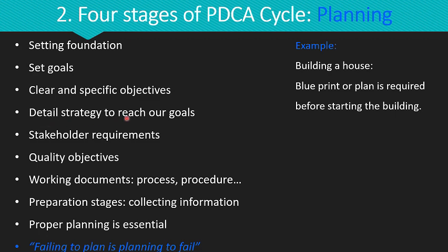We need to figure out how we are going to achieve our goals by developing a detailed strategy and outlining the necessary steps. In the planning stage, we focus on understanding stakeholder requirements in a clear and specific manner. The organization identifies quality objectives based on stakeholder requirements and establishes processes, procedure manuals and working documents needed to achieve these quality objectives.